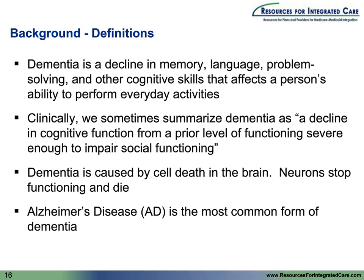The questions we hope to help you address today are: what do you think is wrong with this patient, what are the next steps for further testing, and what guidance will you give the patient and his family? Let's look at some definitions. Dementia is a decline in memory, language, problem solving, or other cognitive deficits that affect a person's ability to perform their everyday activities.